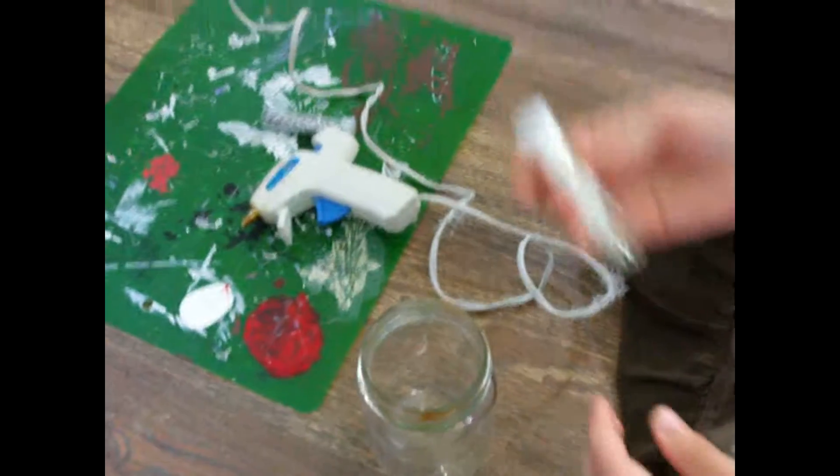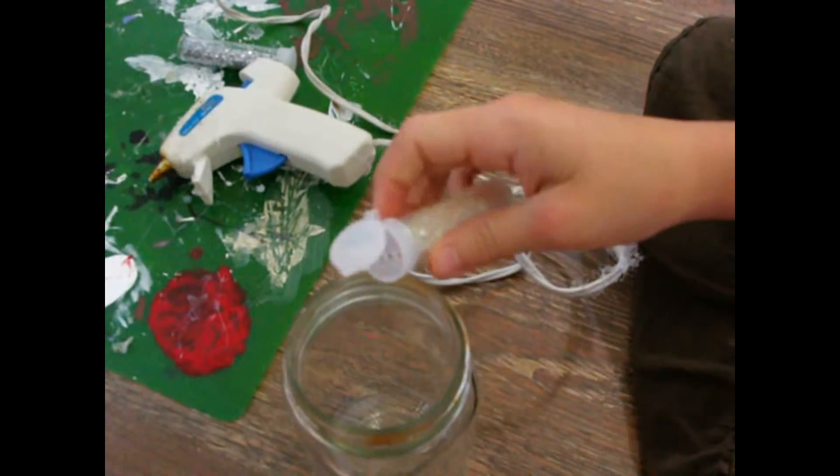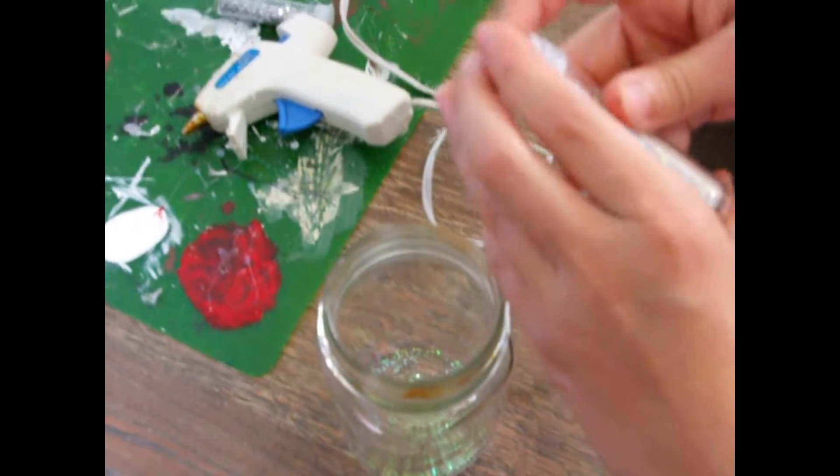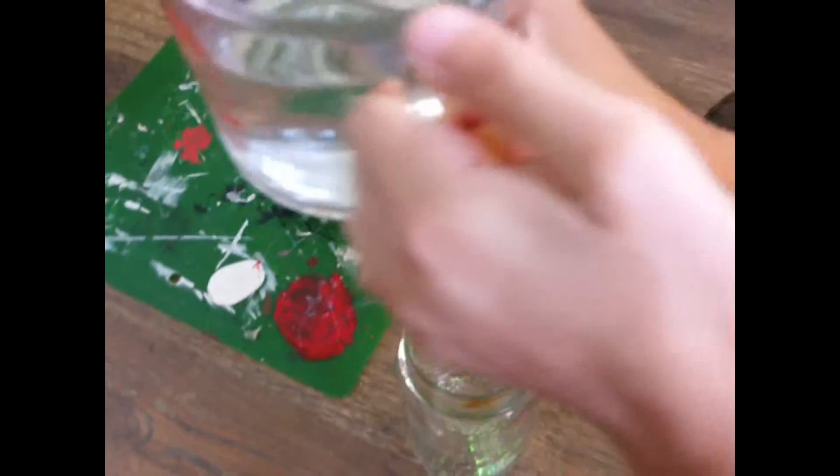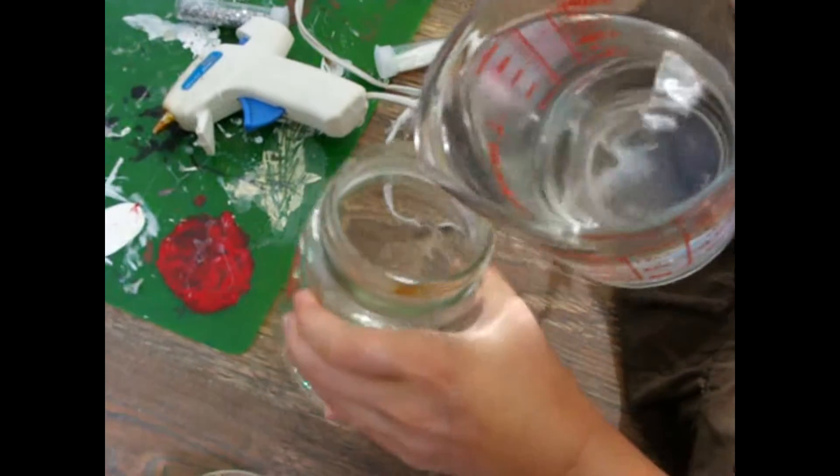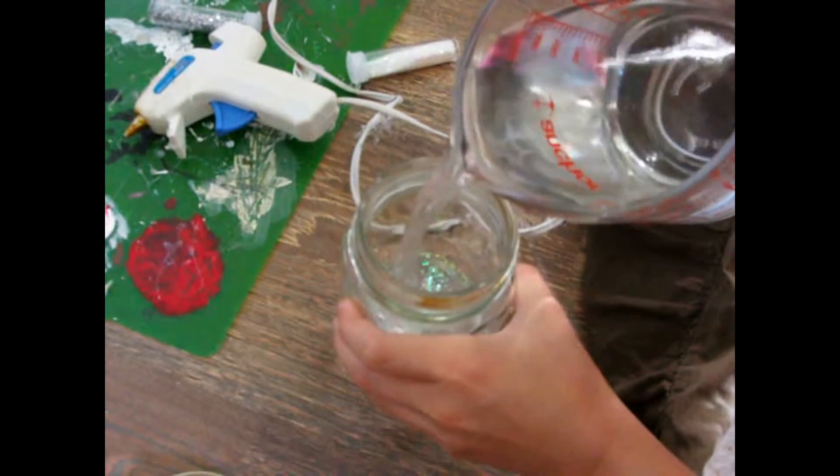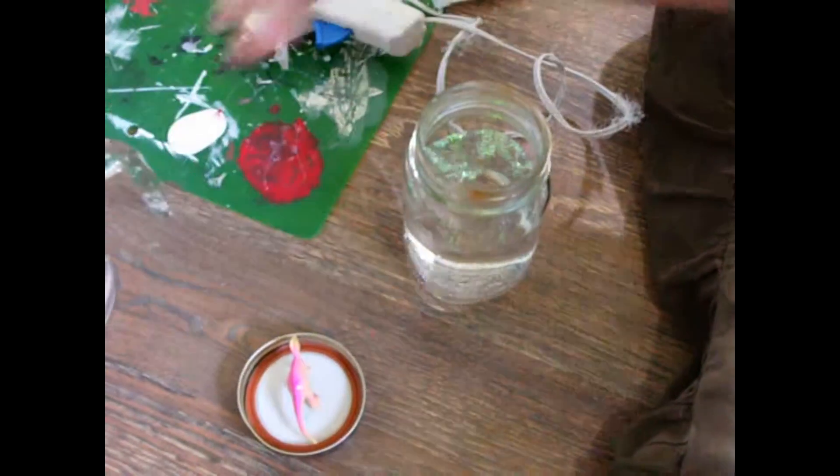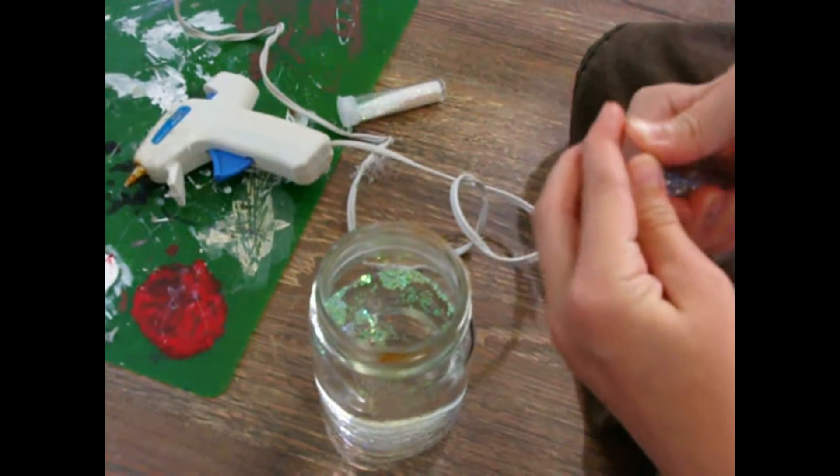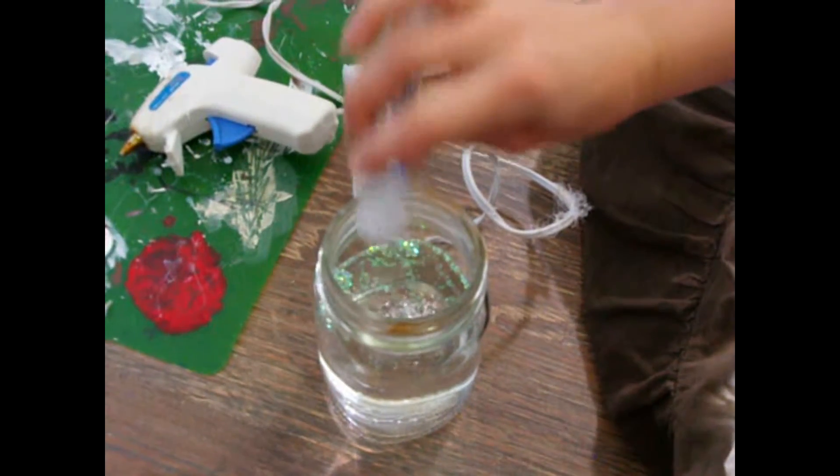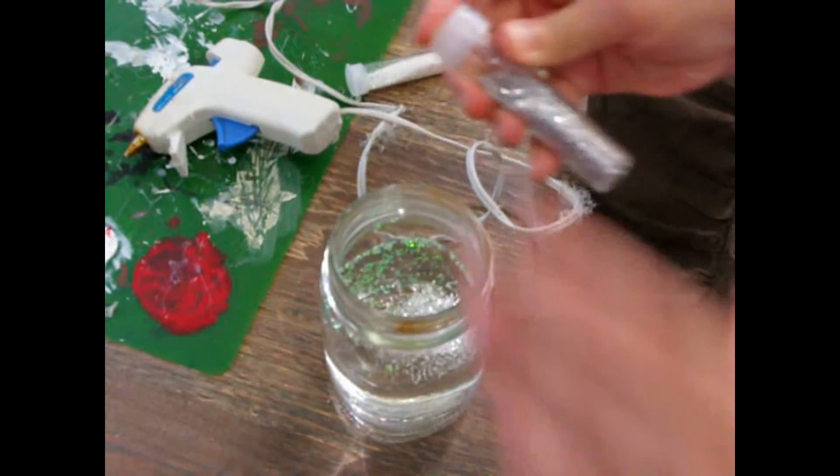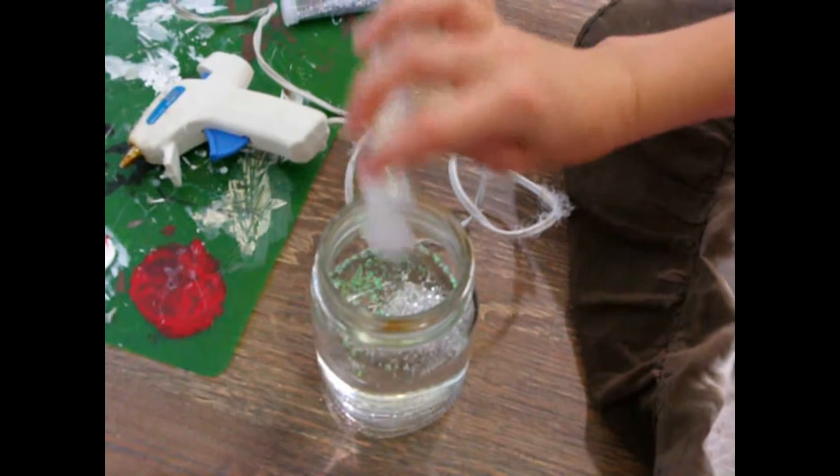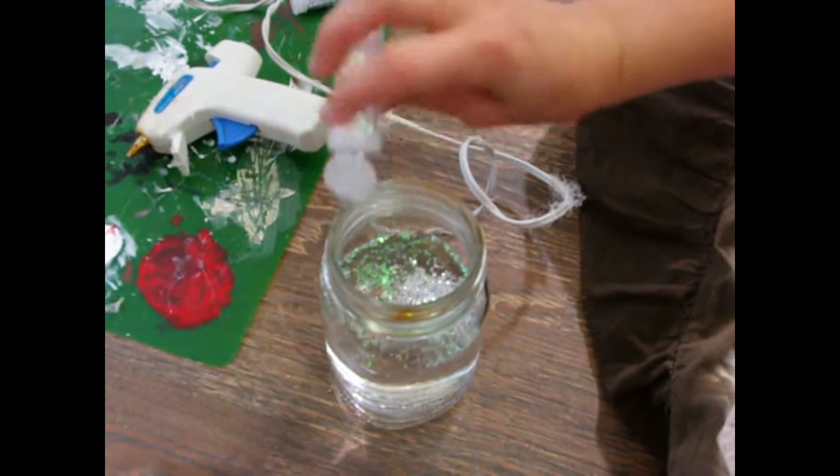And then we'll take some glitter and we'll put some glitter in the jar. Then we'll add some water. It looks like it could use more glitter. I decided to use white glitter and silver glitter, but you can use whatever colors you want.